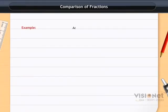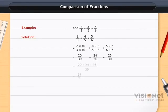Example: Add 2 by 3 plus 4 by 5 plus 5 by 6. Solution: By adding the given fractions, we get 23 upon 10.